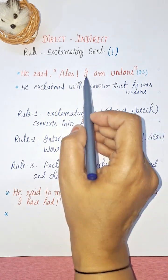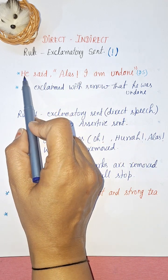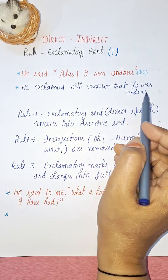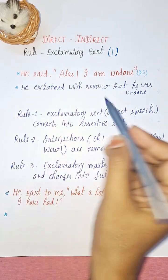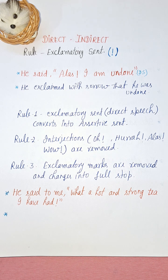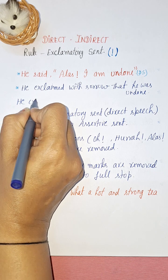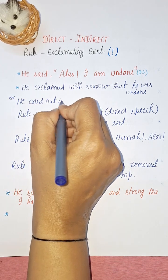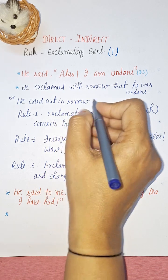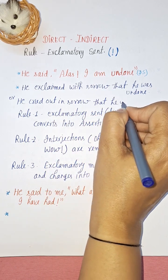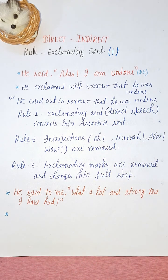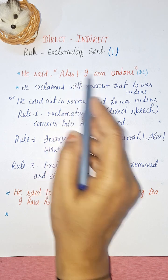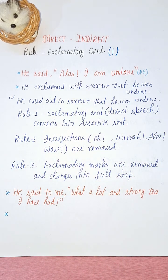The first person pronoun changes according to the subject of the reporting verb. This is your reporting verb and this is your reported speech, so it changes according to the reporting verb subject. You can also say: 'He cried out in sorrow that he was undone.' Instead of 'said' you write 'exclaimed,' the interjection 'alas' is removed, and the exclamation mark is replaced with a full stop.